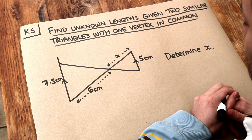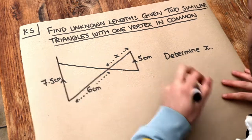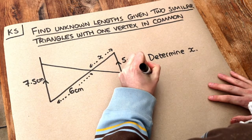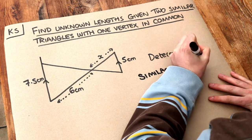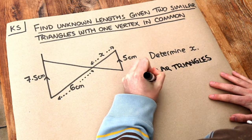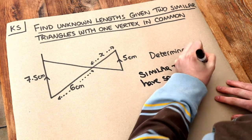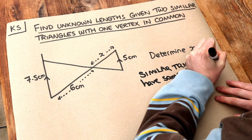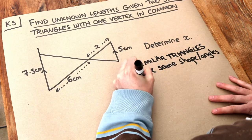Now in the previous video we saw what similar triangles were and basically similar triangles or similar shapes in general have the same shape and have the same angles but not necessarily the same size.